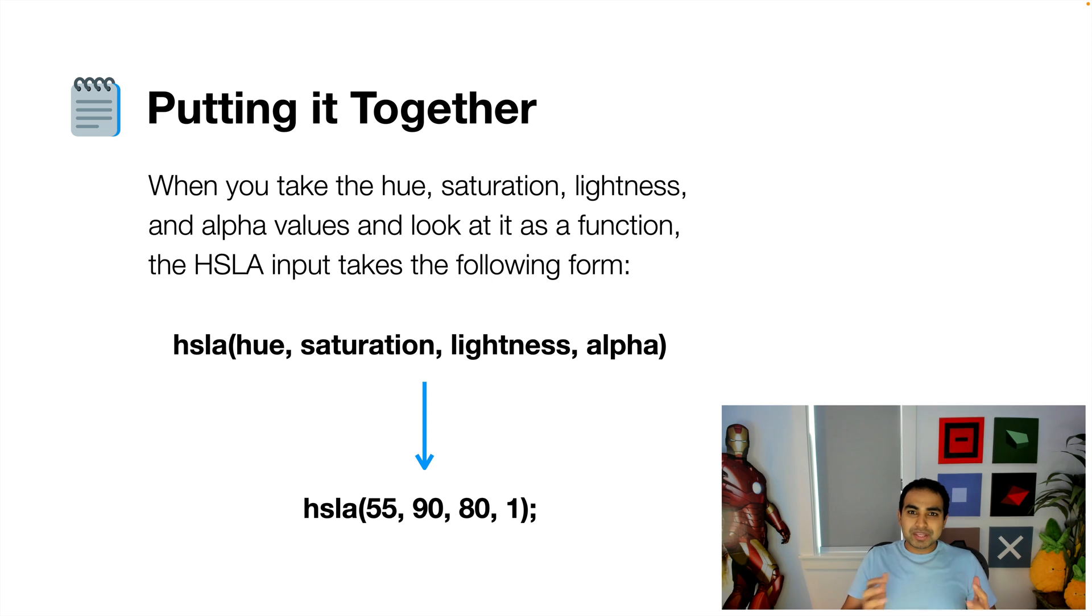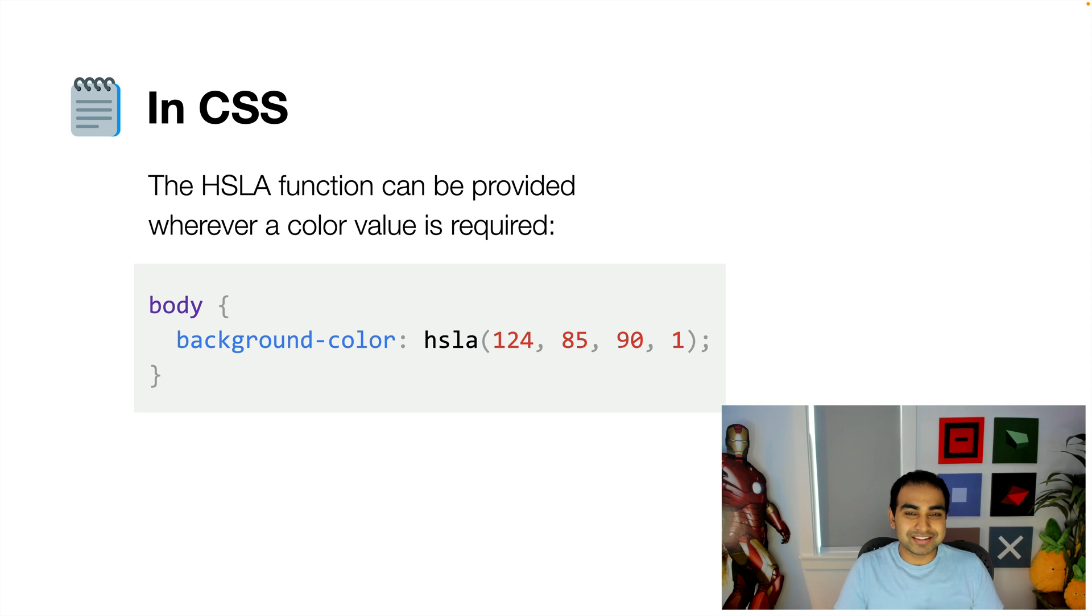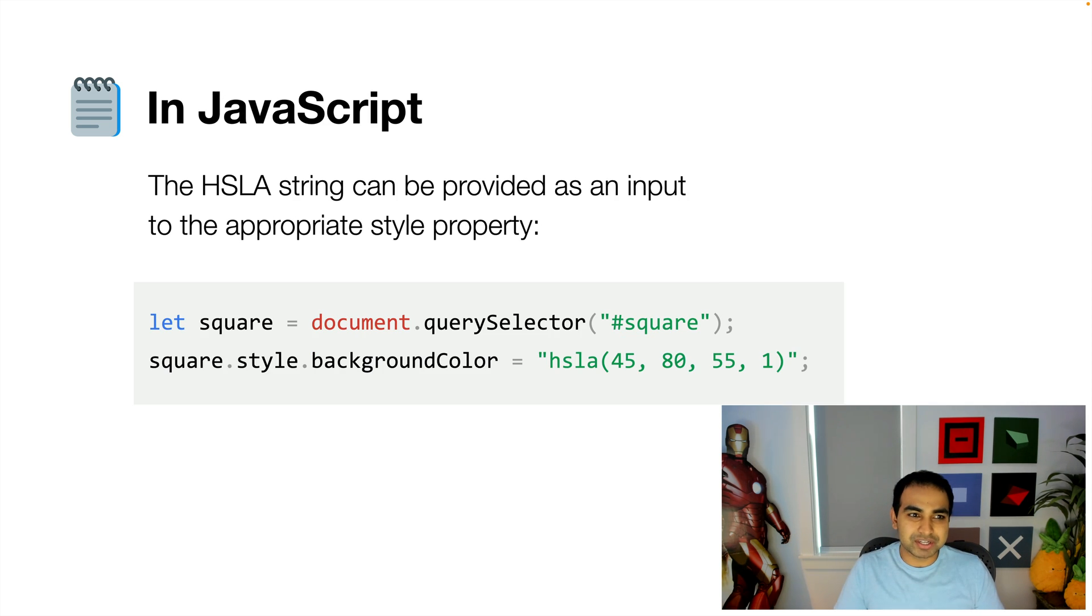Now, the way we typically use it in our typical web development days is very straightforward as well because in CSS, the HSLA function is a supported value that can be provided wherever a CSS property is looking for a color. So in this case, I have a body selector with the property being background color and the value is HSLA and the four numbers that go with it to map to the color that we want.